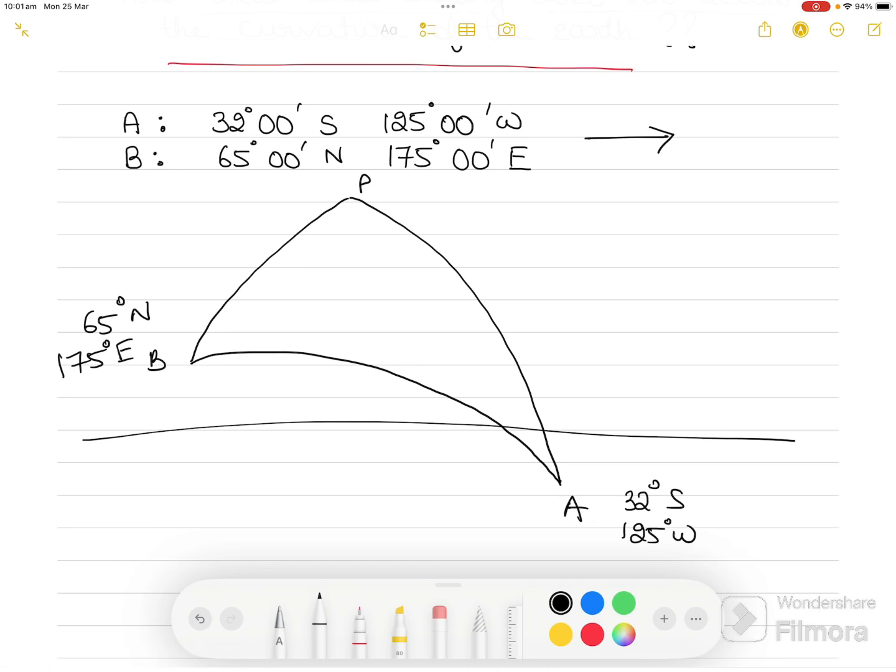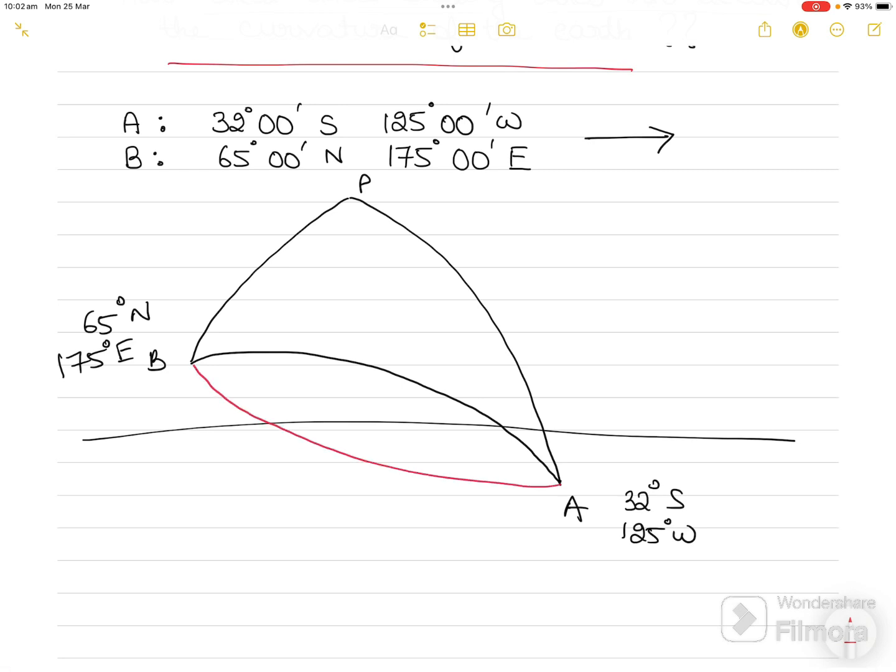Students often ask me why have you drawn this diagram like this? Why have you used an arc? I say because these are arcs of great circles. But then they say why didn't you draw something like a straight line? These are drawings that depict the numerical question, and we don't know how the arc of the great circle will be drawn in real life.